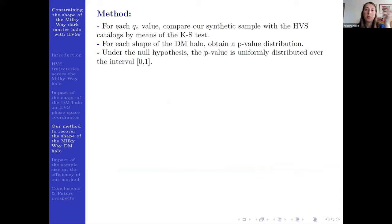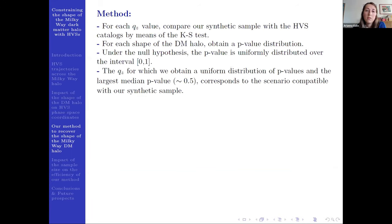Then we employ the property of the p-value, according to which under the null hypothesis, so when the two distributions we are comparing are compatible, the p-value is uniformly distributed over the interval 0 to 1. And so the q_z for which we obtain a uniform distribution of p-values and the largest median p-value that will be around 0.5 will correspond to the scenario that is compatible with our synthetic sample of HVS.